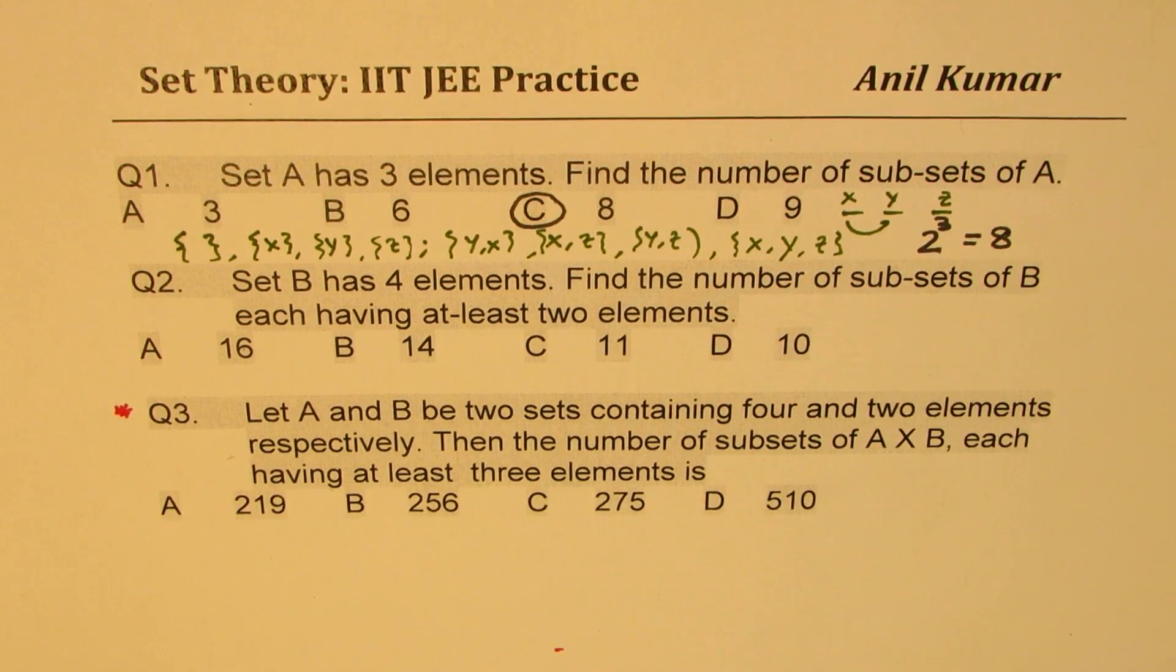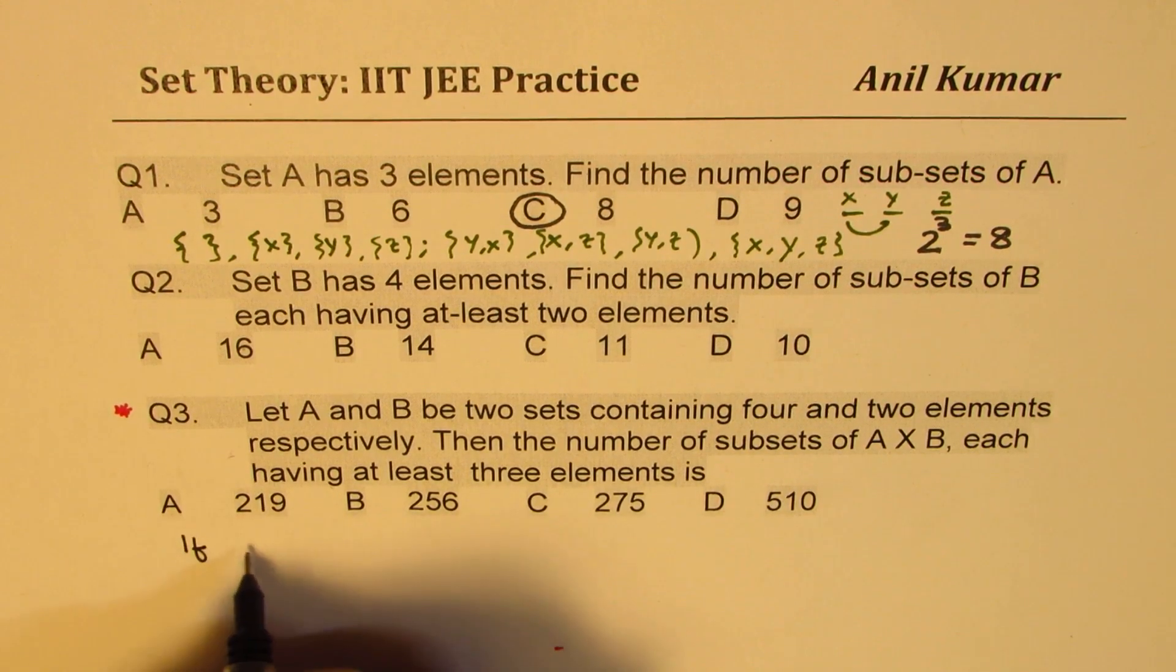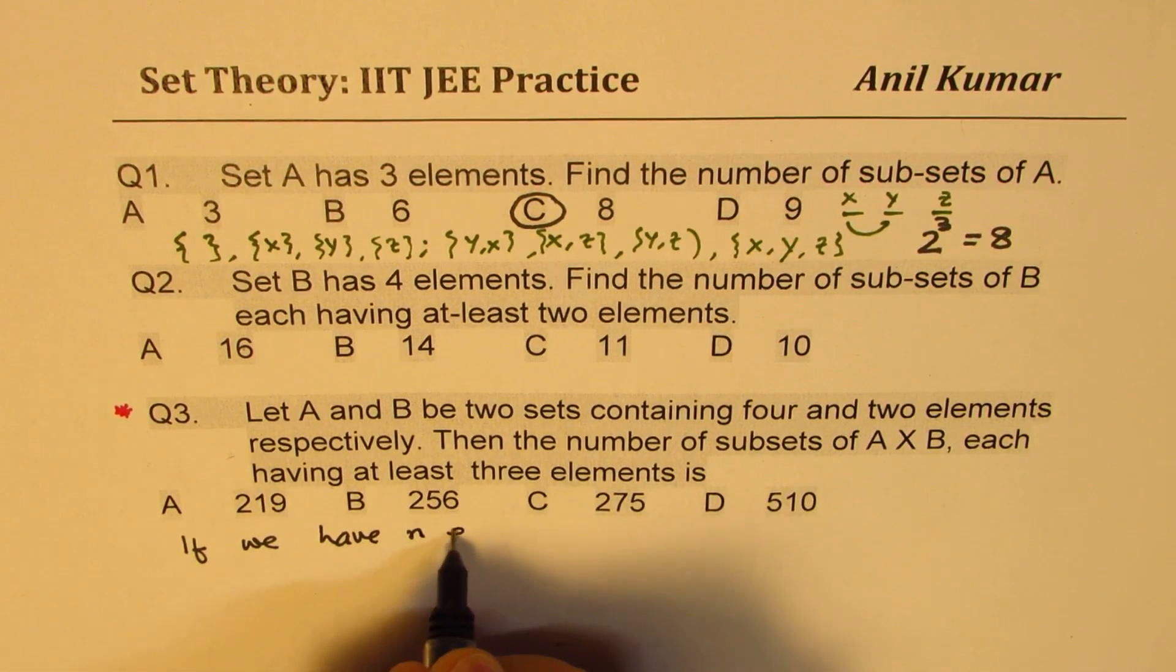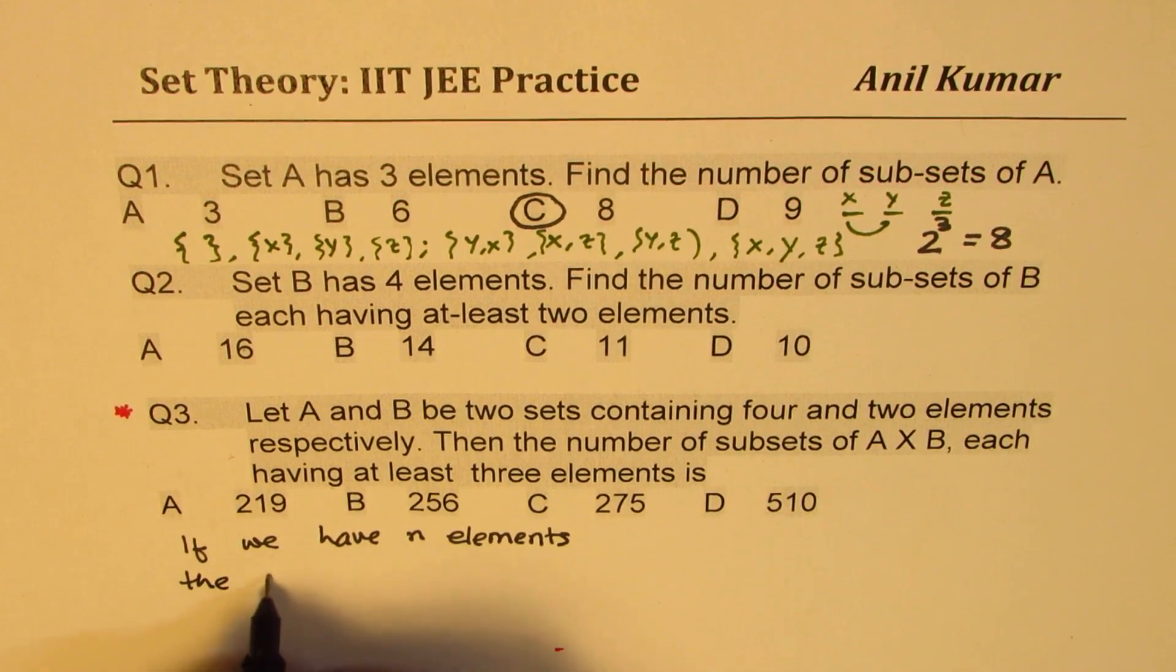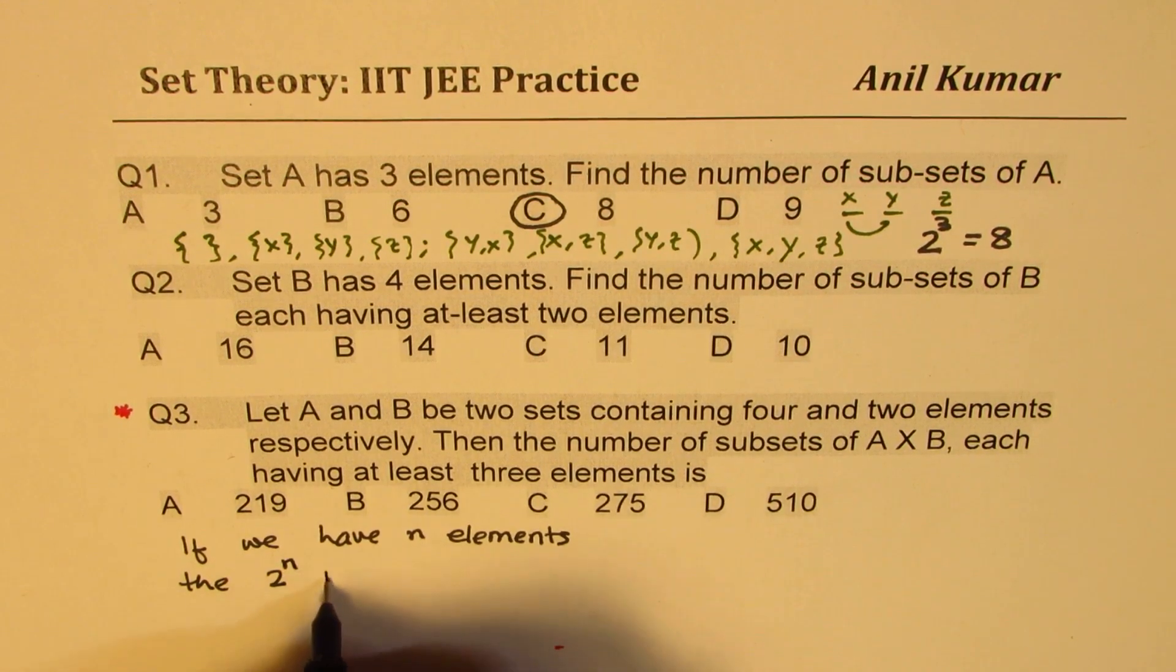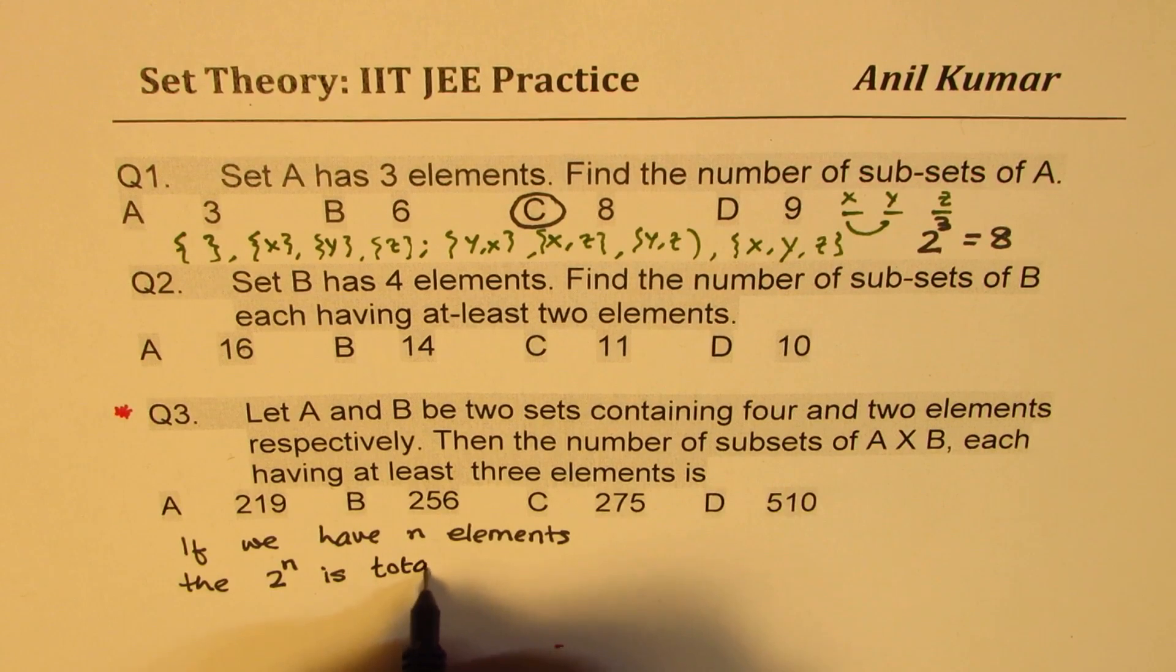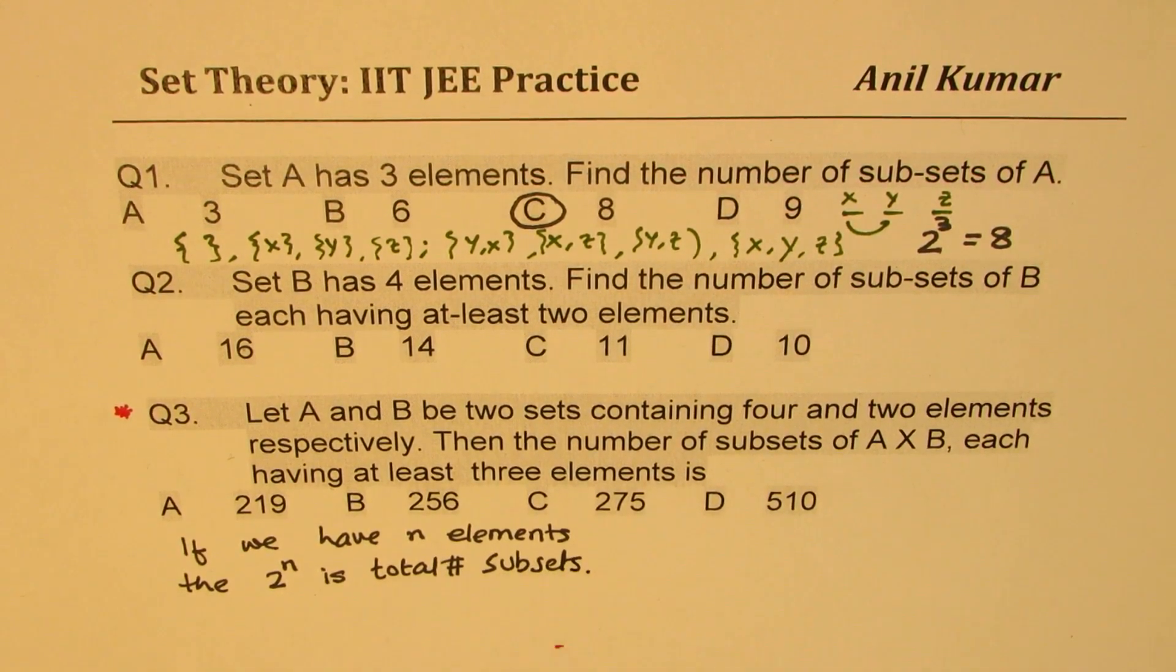So that is a faster approach. So from here, what we learn is that if we have n elements, then 2 to the power of n is the total number of subsets. Is that clear? Now this is a very, very important statement to remember.